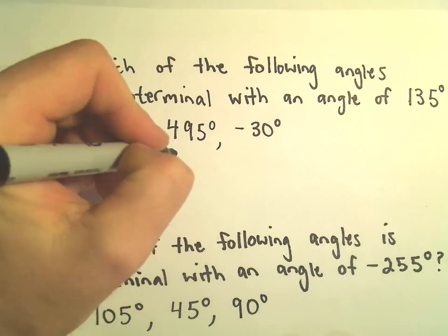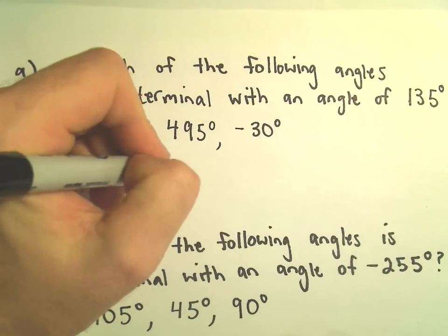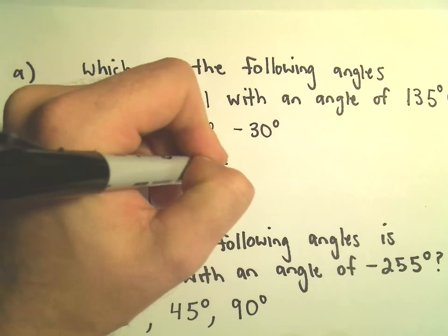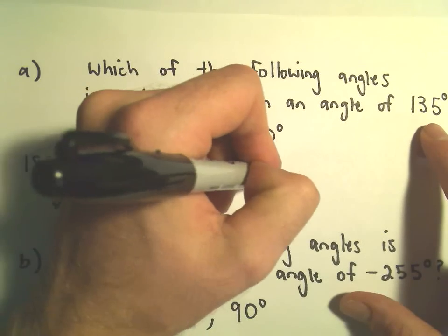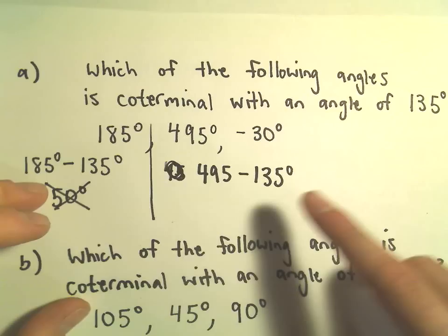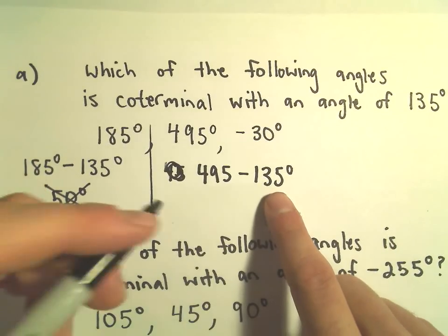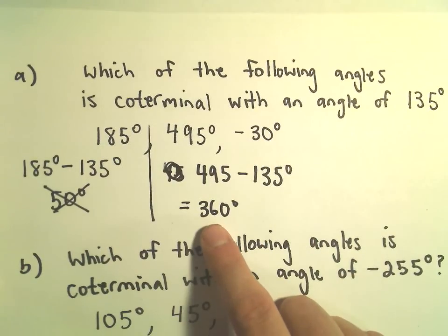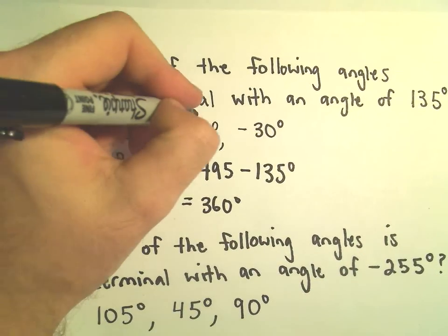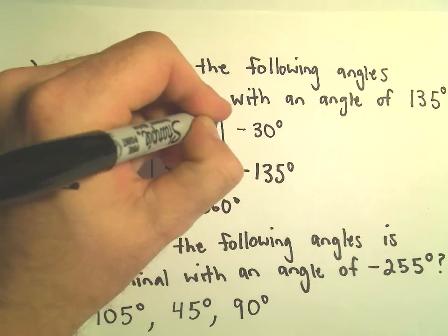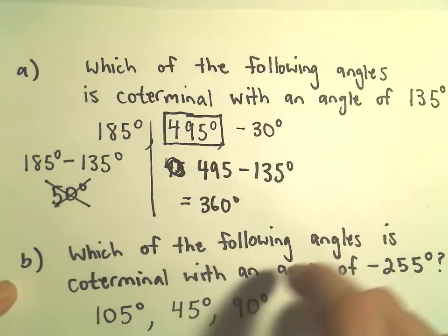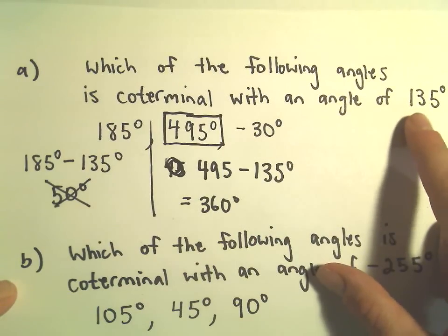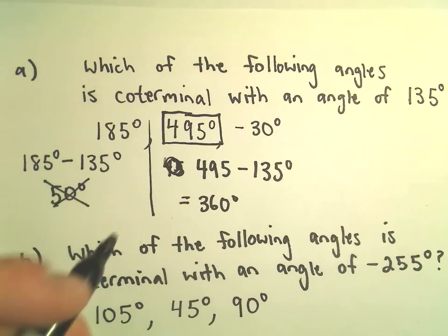But same idea, so let's see we can check 495. 495 minus 135, well, 495 minus 135 that actually gives us 360 degrees. And well, certainly that's a multiple of 360, so 495 degrees is definitely going to be coterminal with the angle measuring 135 degrees.